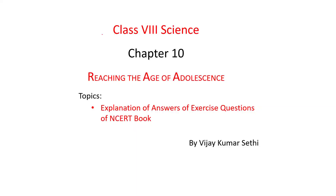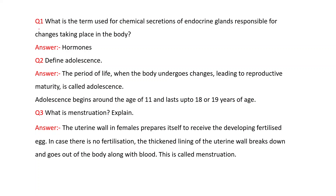Class 8 science chapter 10: Reaching the Age of Adolescence. In this video I will explain the answers of exercise questions of the NCERT book. First question: What is the term used for chemical secretions of endocrine glands responsible for changes taking place in the body? One word answer only: hormones. Second question: Define adolescence.